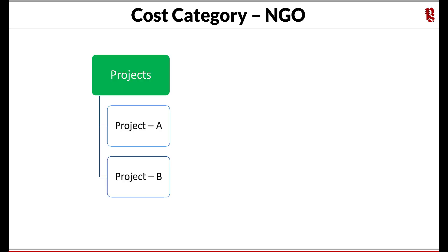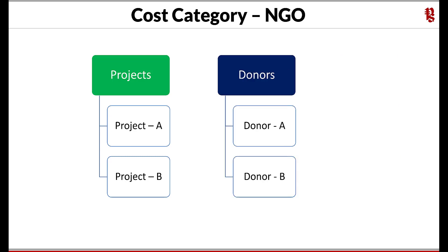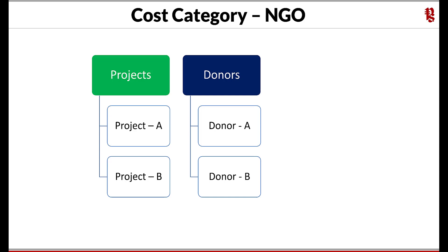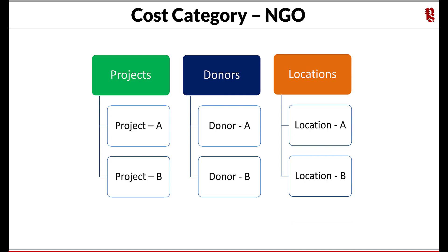Let us now view a flow chart. We have a category called Projects — under it, Project A and Project B are the cost centers. The second cost category is Donors, with Donor A and Donor B as cost centers. The third component is Locations, another cost category, where Location A and Location B capture where the programs are carried out.